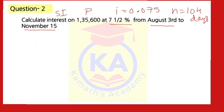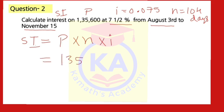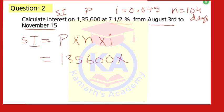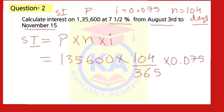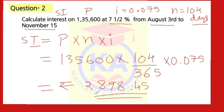Now find SI: SI = P × N × I. P = 1,35,600; N = 104/365; I = 0.075. Multiplying these gives SI = Rs. 2898.45. Focus on how to find N using dates, then the value of I, then the multiplication. The answer is Rs. 2898.45.